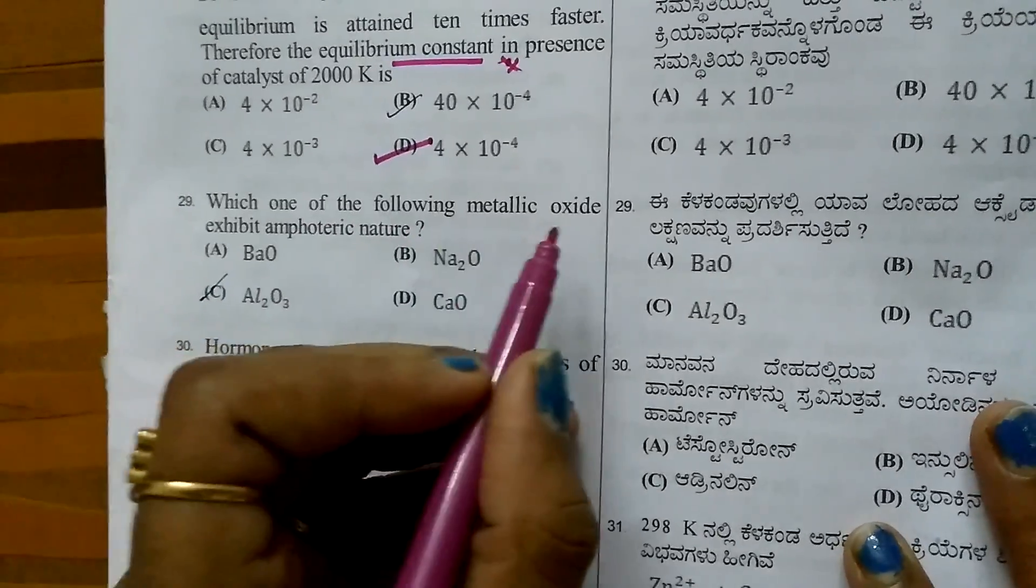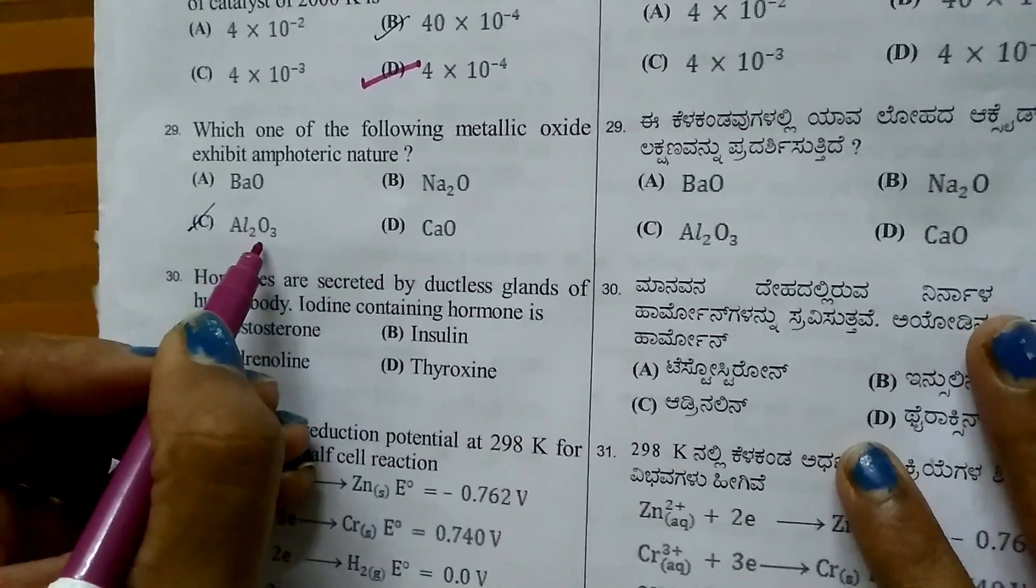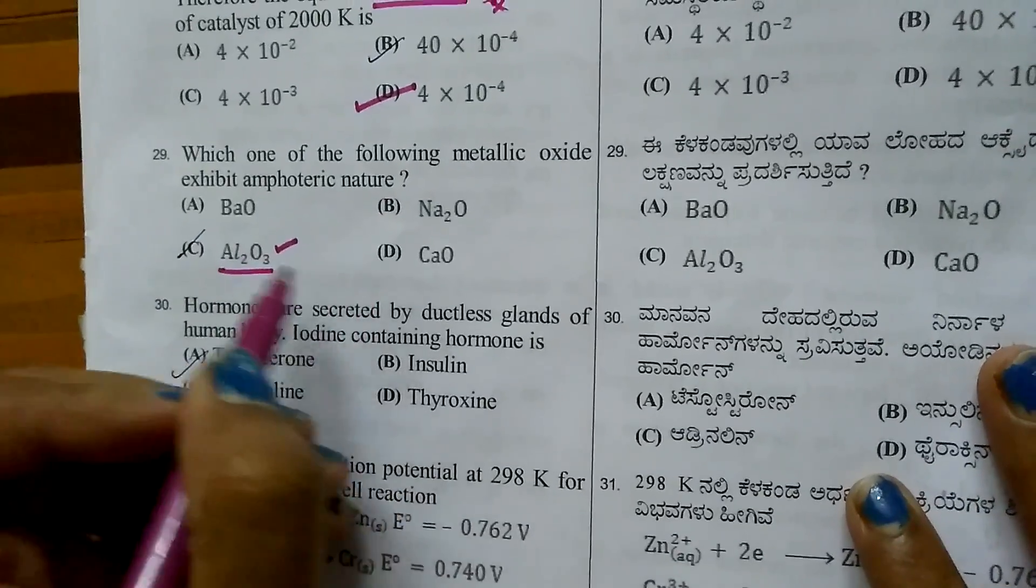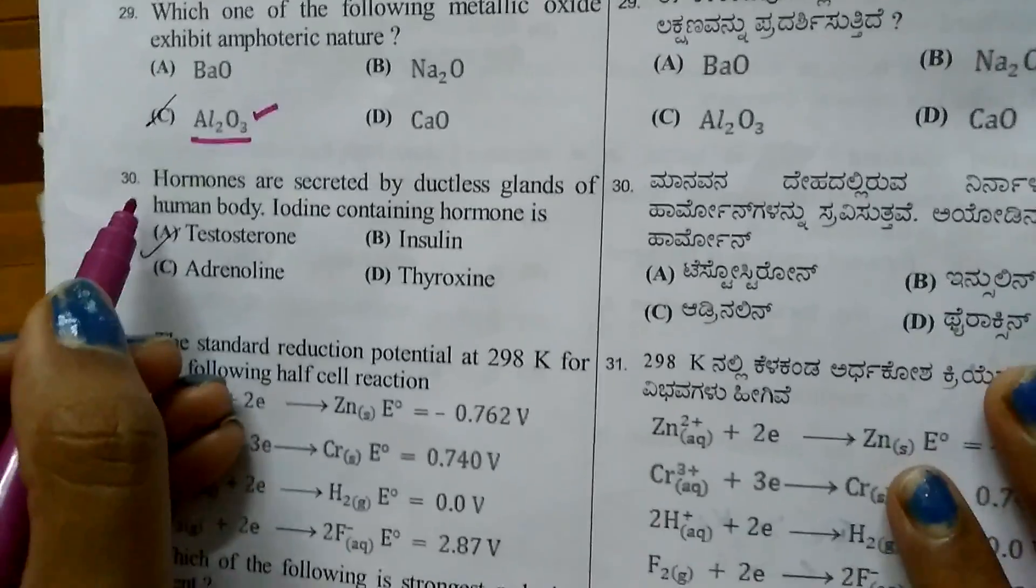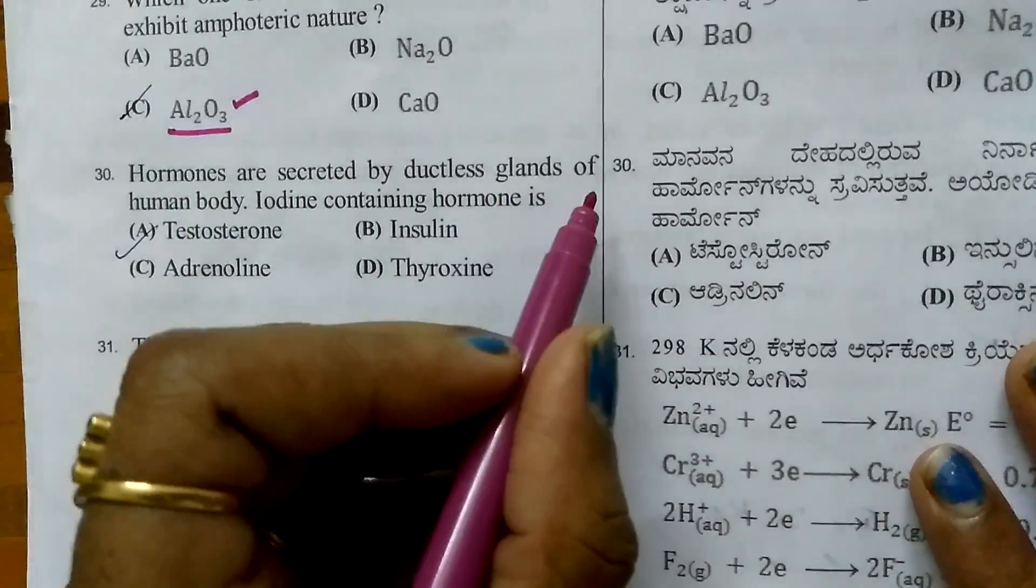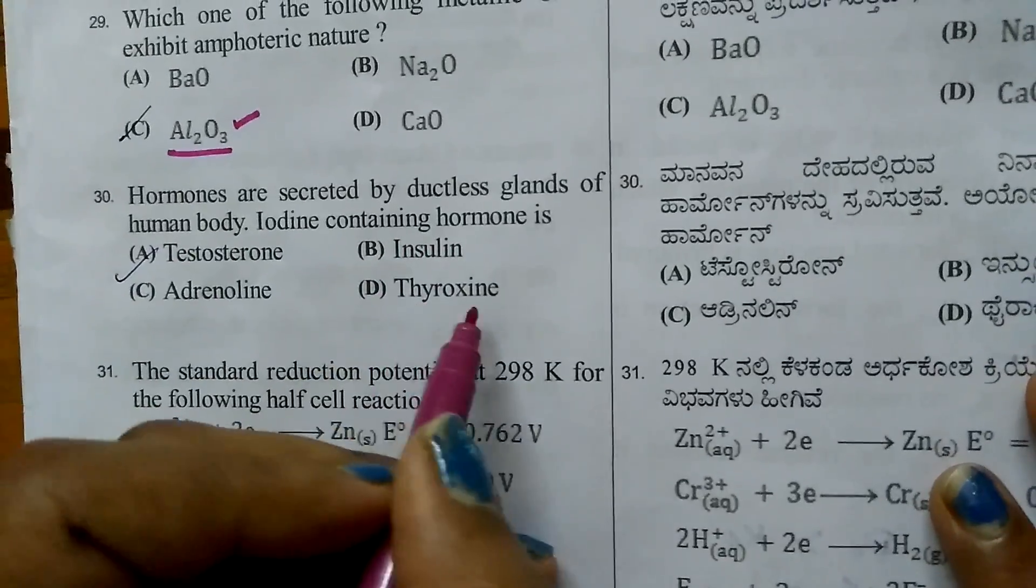Which metallic oxide exhibits amphoteric nature? Al2O3 is amphoteric because it reacts with acids as well as bases. Question 30: Iodine-containing hormone thyroxine is secreted by ductless glands.